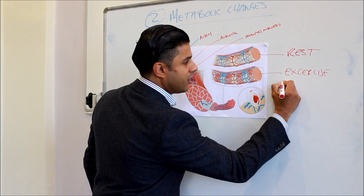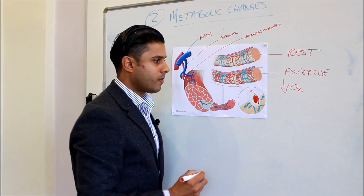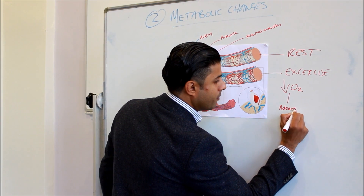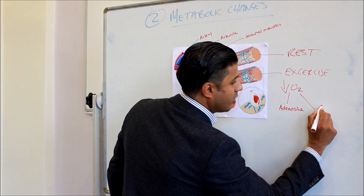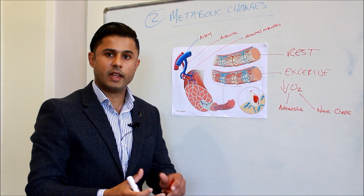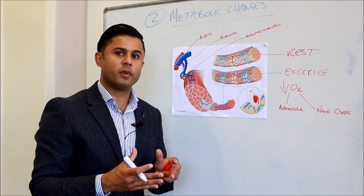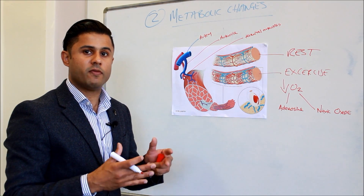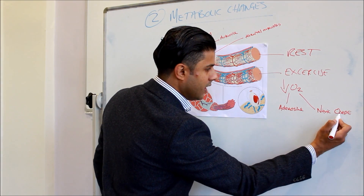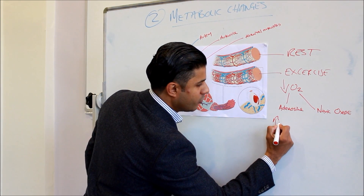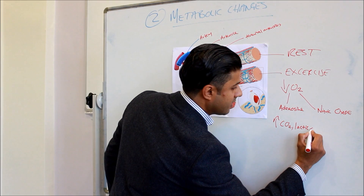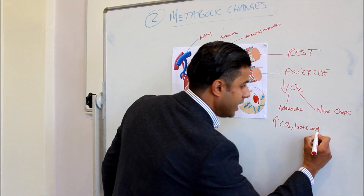We're also getting an increased propensity of the micro vessels which are dilating and they're sending a signal to the larger arteries to keep that dilation going. Now essentially during exercise what's happening is we're getting a reduction in oxygen, and this is causing the release of vasodilating molecules called adenosine and also nitric oxide. Now these are two molecules which are released by the blood vessels and they cause vasodilation.